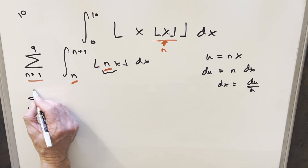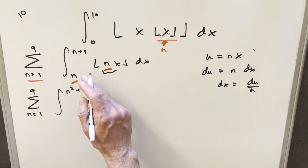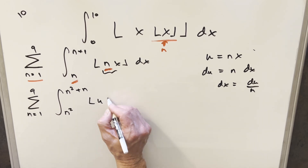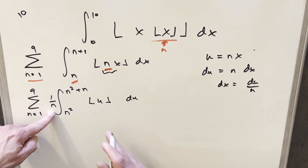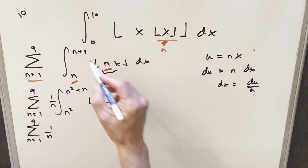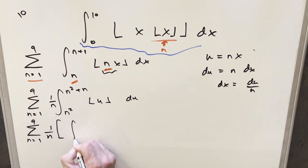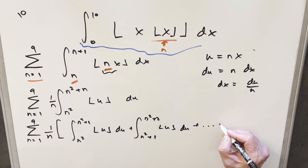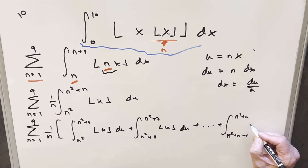We keep the summation out front and update the bounds. Plugging n plus 1 in for x gives u equals n squared plus n, and plugging n gives u equals n squared. The integrand becomes floor of u, and dx becomes du over n, which we bring out front as 1 over n. Now with just u inside the floor function, we can break the integral on integers — from n squared to n squared plus 1, then n squared plus 1 to n squared plus 2, all the way to n squared plus n minus 1 to n squared plus n.